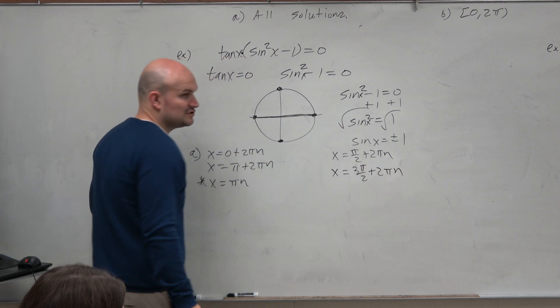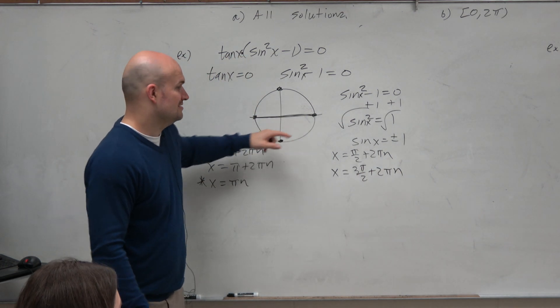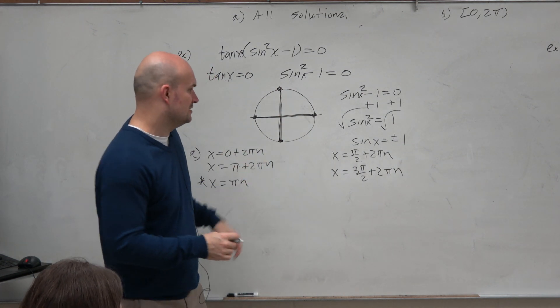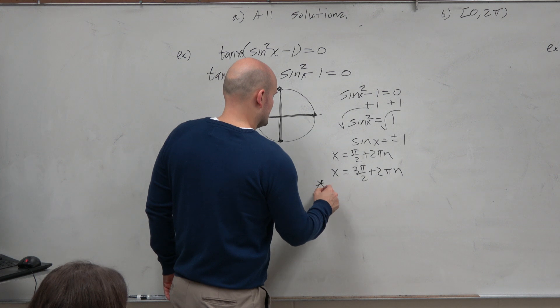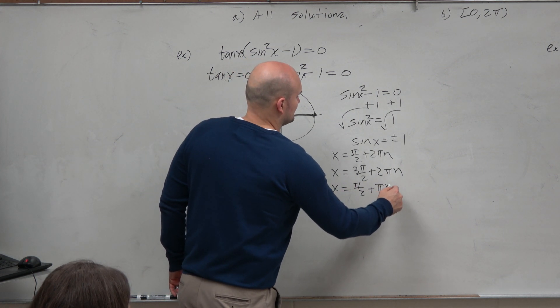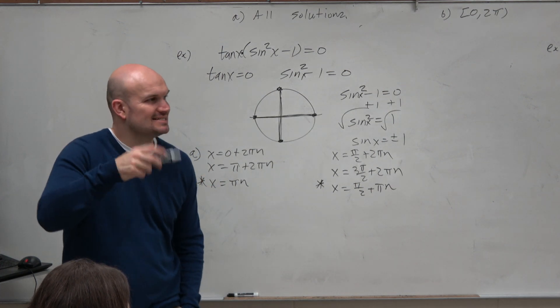Or if you're starting to get good at this, since these have an equal distance away from each other, we could also just write x equals π halves plus π n, right? Because they're π distance away from each other.